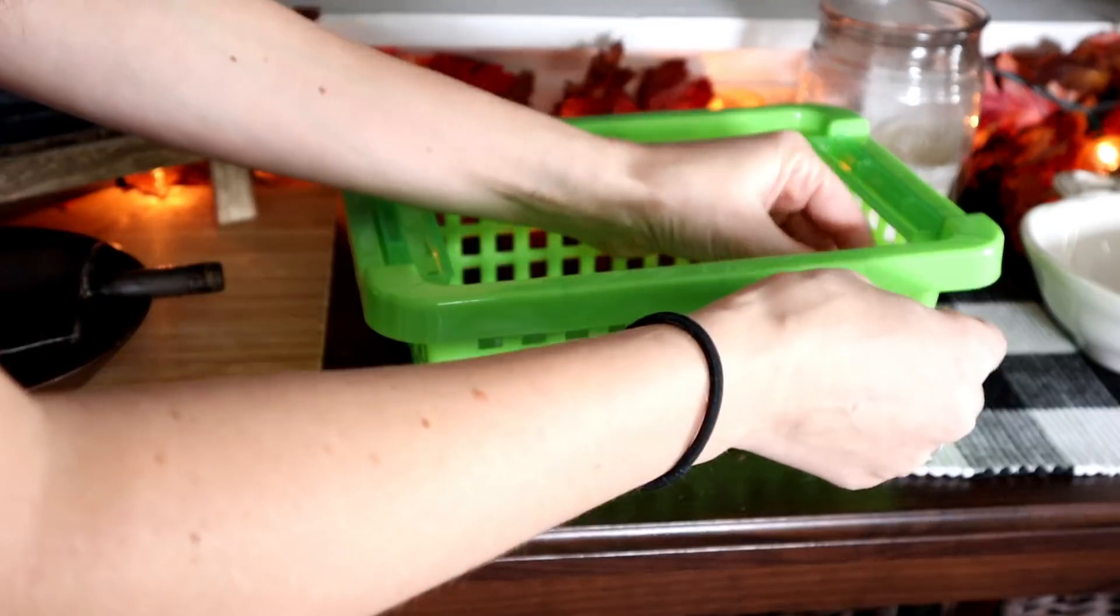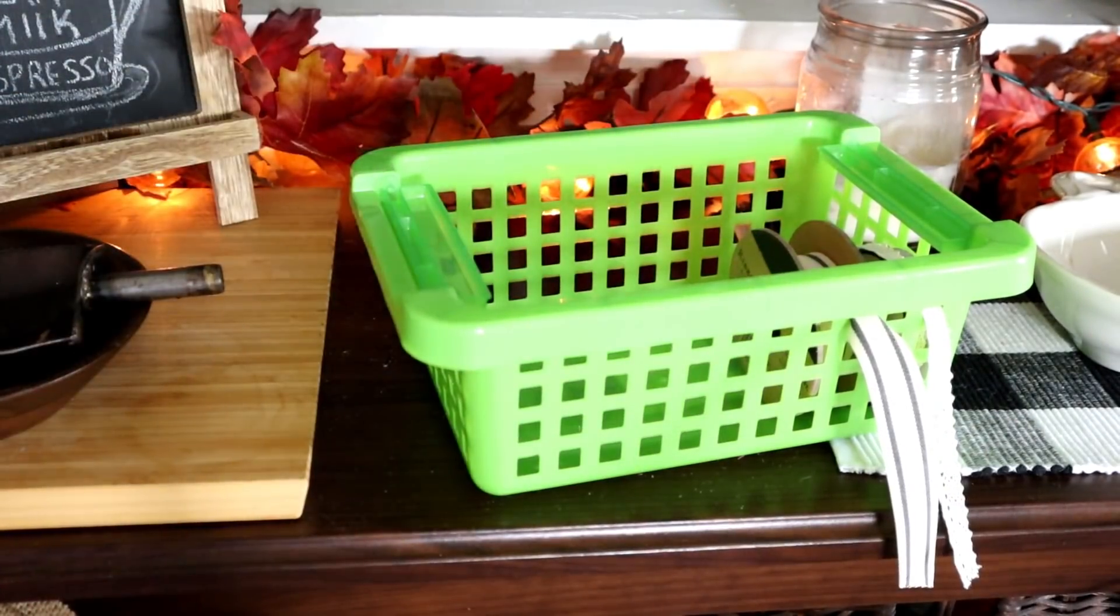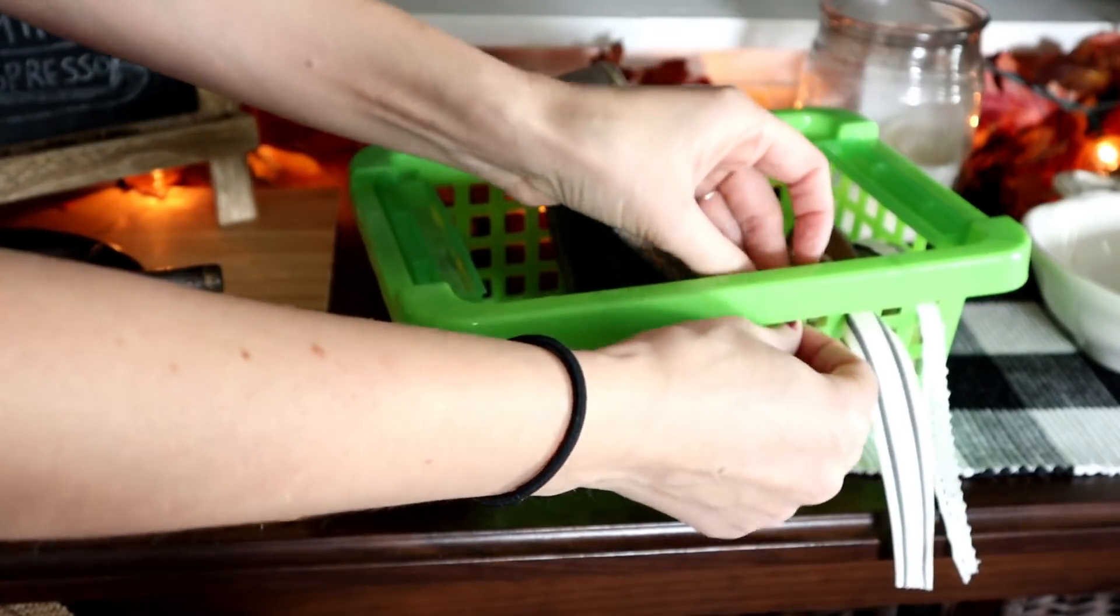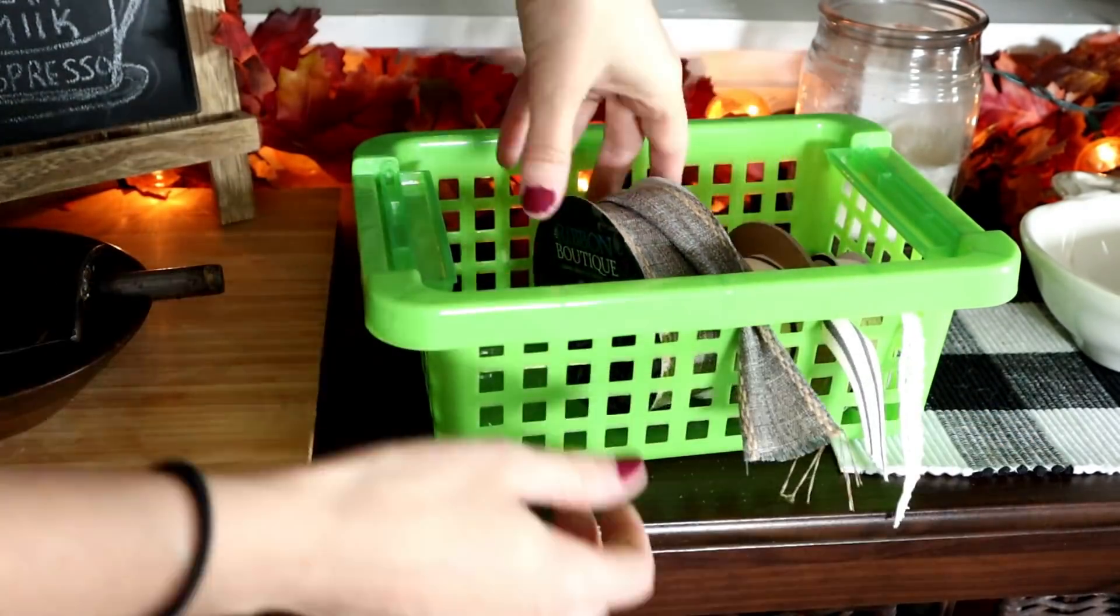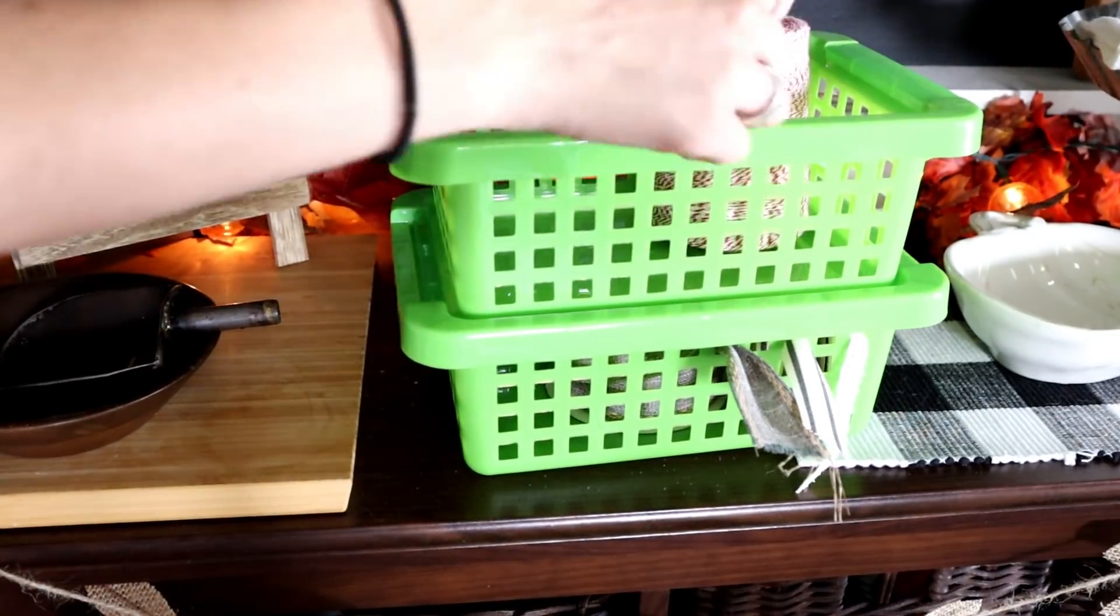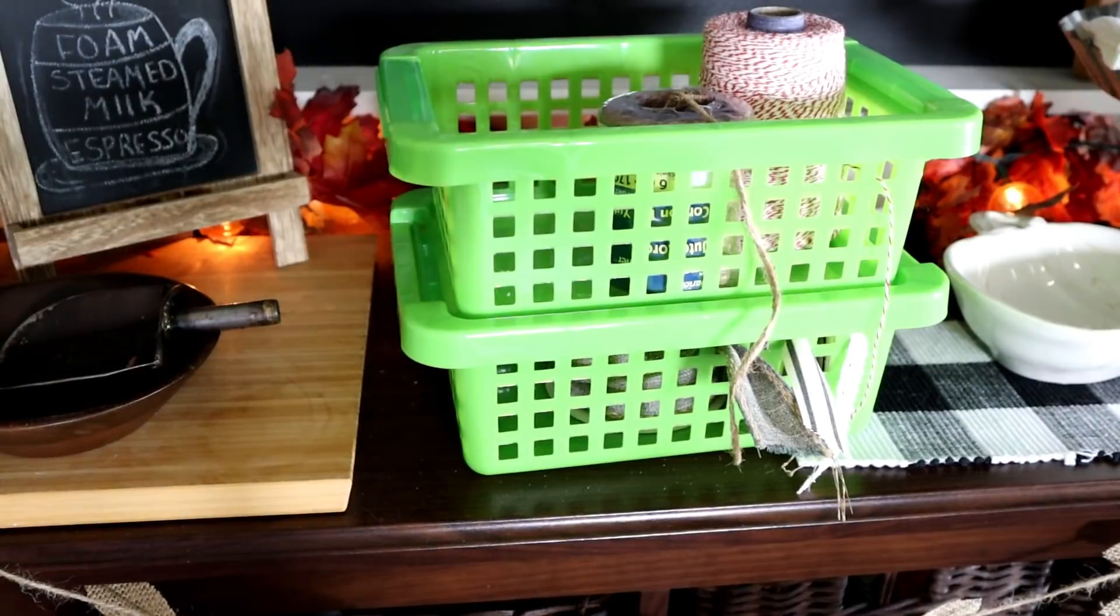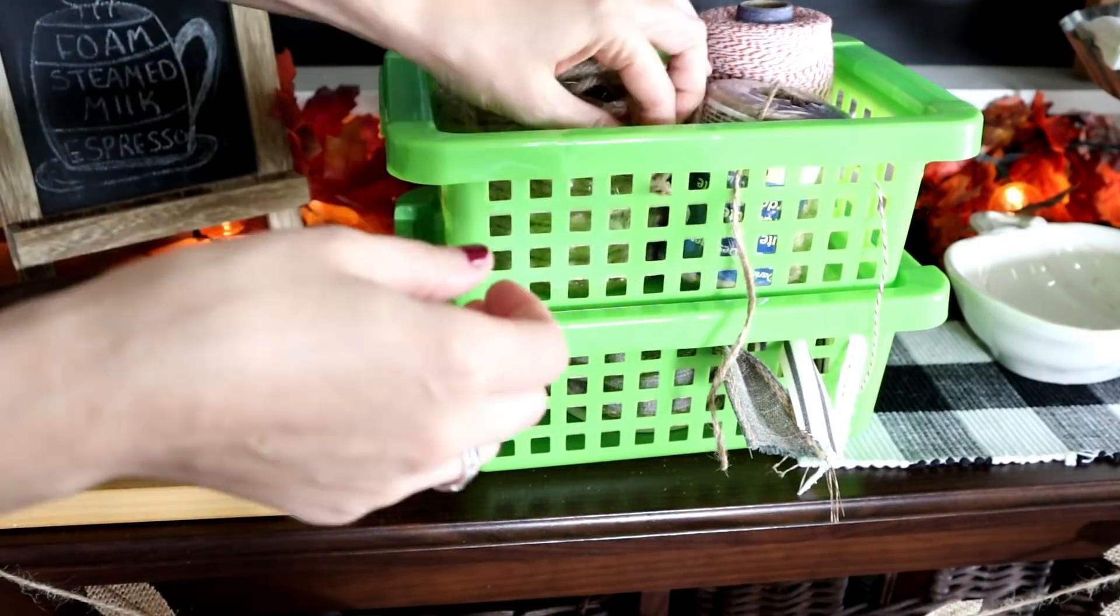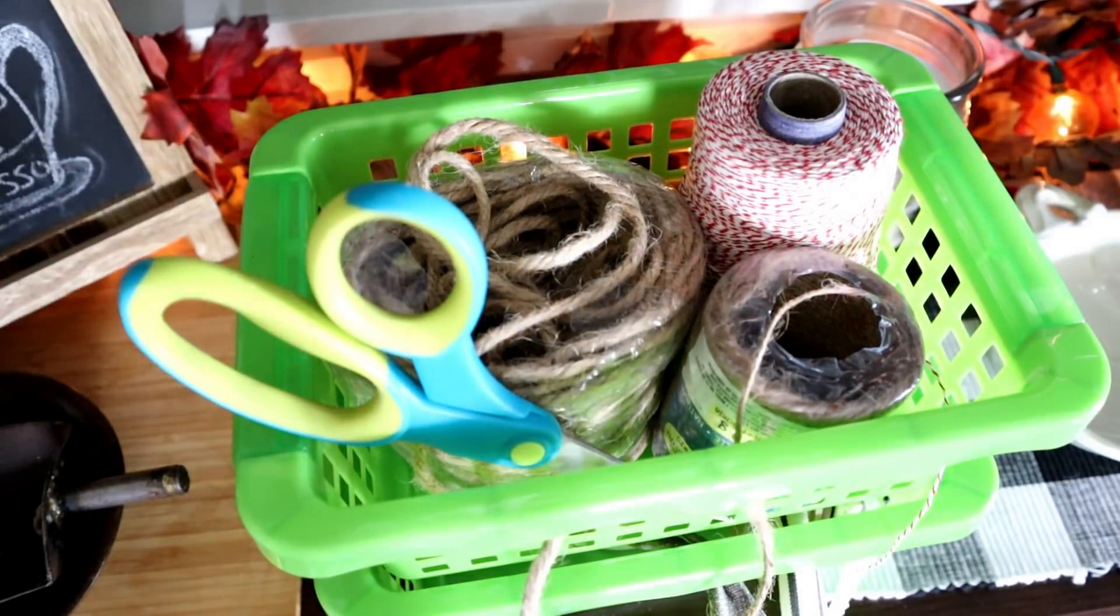We all love the storage solutions that Dollar Tree has, but this is a great tip for organizing both your ribbon, your twine, your rope, even lace—so many different things you can feed through those holes and keep them nice and organized. I like these baskets because they stack on top of each other, so it allows you to keep everything together nice and tidy and organized. You can also add a pair of scissors to your basket for easy access.